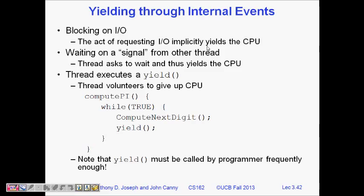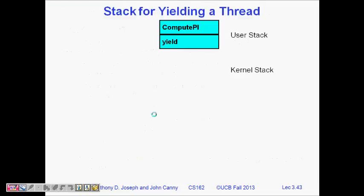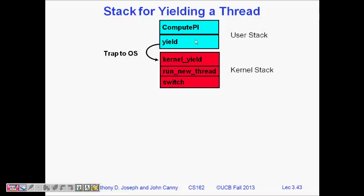Another way the dispatcher gets control back is yielding. If a thread requests I/O — for example, it wants to print to an output device — it will automatically relinquish the CPU, since its work is now directed at the output device. If a thread is just waiting for something to happen, it doesn't need the CPU, so the OS moves on to the next thread. A cooperative example: 'compute pi' yields after calculating each digit, so other threads get their turn.